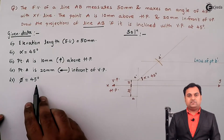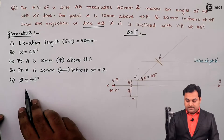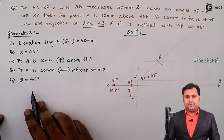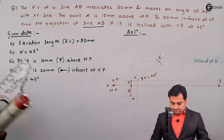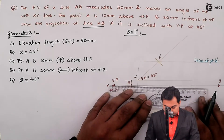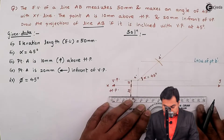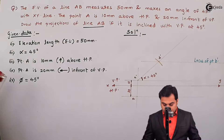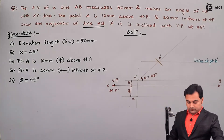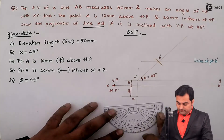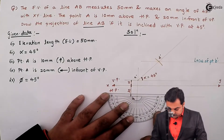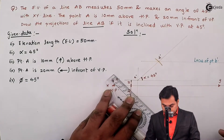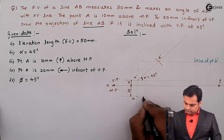Angle phi is given as 45 degrees — that is the inclination of line AB with VP, and it will be seen in HP. For that, I am drawing a light horizontal line parallel to XY through point A and measuring 45 degrees.